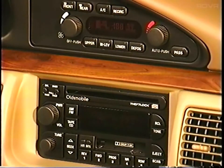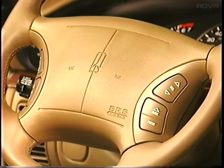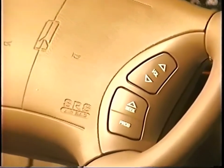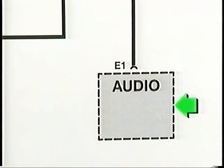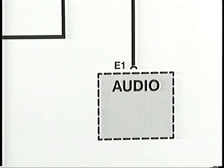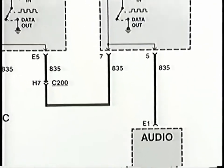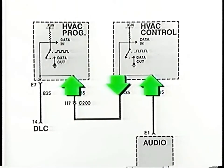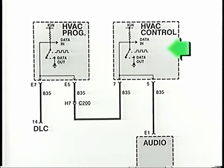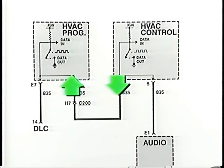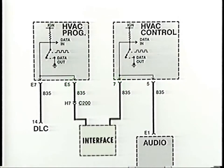In the 1995 98 and Aurora, and some 88s, controls for climate and audio are on the instrument panel and on the steering wheel as well. In these cars, every driver command from the steering wheel — whether it's for audio, heater, or air conditioning — is sent as a specific voltage on a separate line to the radio, where it's converted to a square wave message. If it's a climate control command, the radio then sends it on by bus to the HVAC programmer, which makes the desired change. A climate command from the instrument panel simply goes from the HVAC control head to the programmer.